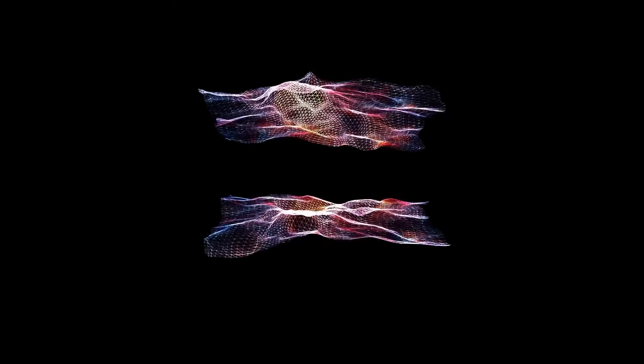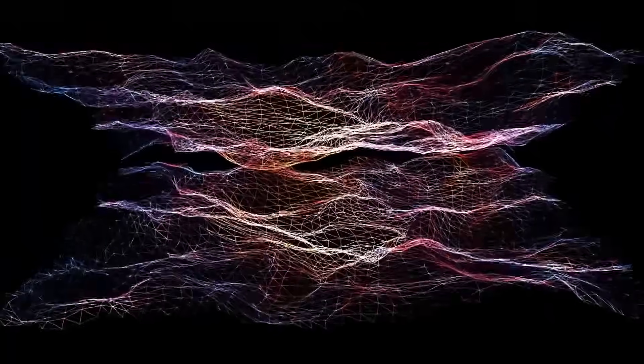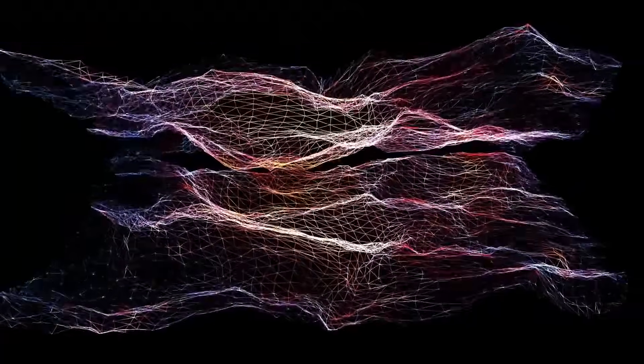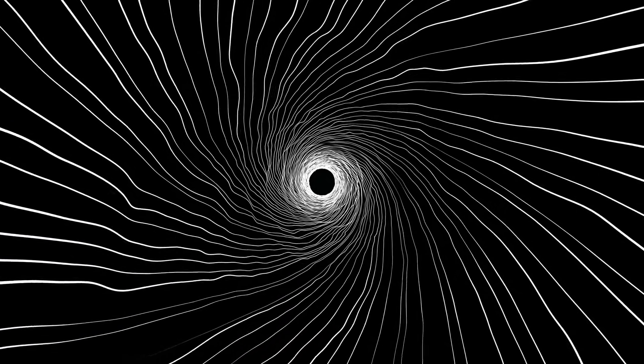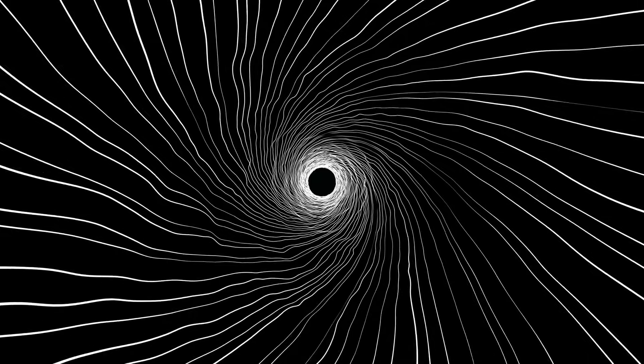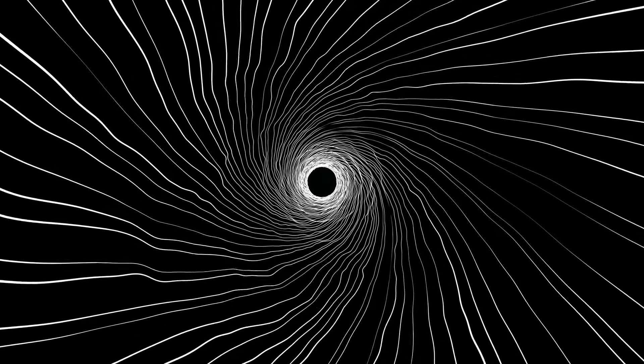According to string theory, all the basic particles are actually tiny vibrating strings, kind of like how different notes come from vibrating violin strings. The different vibrations of the strings in space-time create the strange properties of the tiniest particles we call quantum.